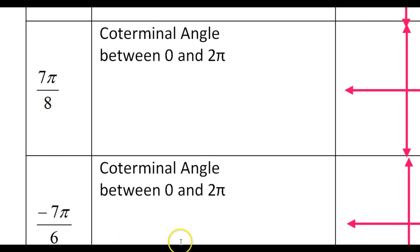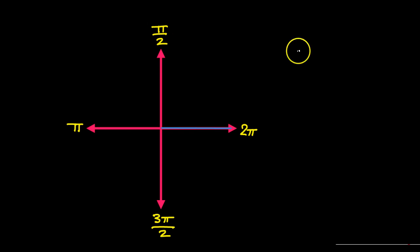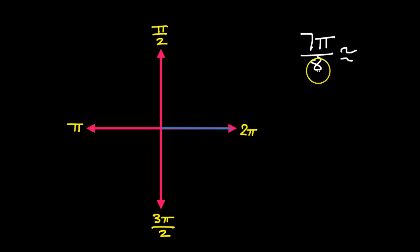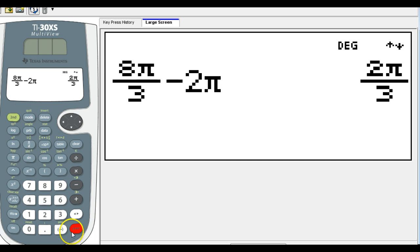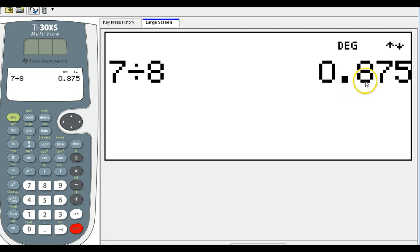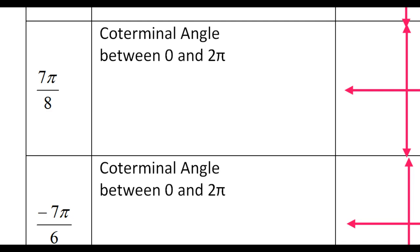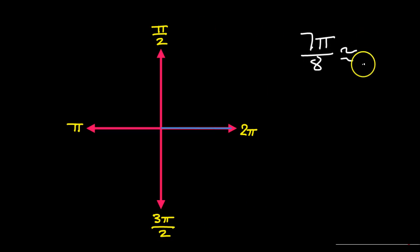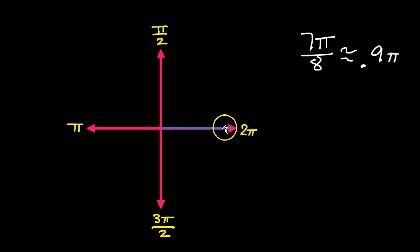Next we have 7 pi over 8. Let's see what kind of decimal pi that is — 7 eighths pi. Obviously it's less than 1. It's approximately 0.9 pi, so it's almost 1 pi. So we're looking at an angle that is over here in the second quadrant, something like that. So that is a picture of our 7 eighths pi.